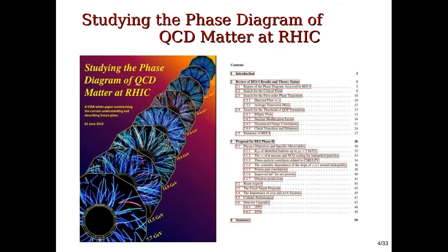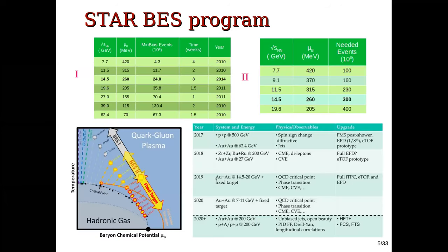From 2005 the STAR experiment started a beam energy scan at low energy. You can see the cover of the STAR preprints and the tasks which must be studied in the STAR Beam Energy Scan. There is also a fixed target program. STAR has finished Beam Energy Scan I and is now working with data from Beam Energy Scan II — some data are available, but statistics are not yet sufficient for full physics analysis.